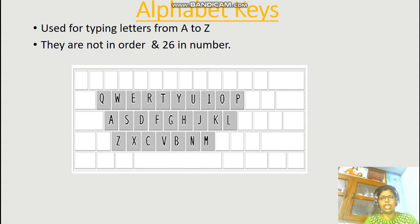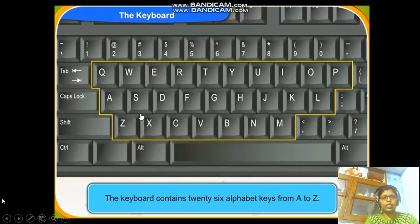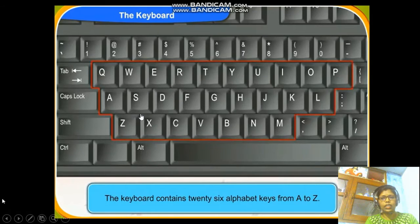Alphabet keys. Alphabet keys have letters on them from A to Z, but they are not in order. There are 26 letters. As you can see, it starts with Q, W, E, R, T, Y — not with A, B, C, D. It is not in a sequence. This Q, W, E, R, T, Y layout is called a QWERTY keypad, which you see on a keyboard as well as on a mobile keypad.